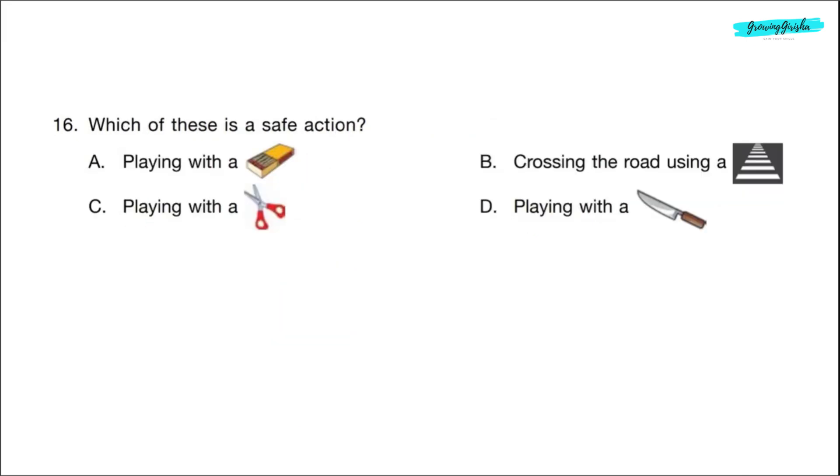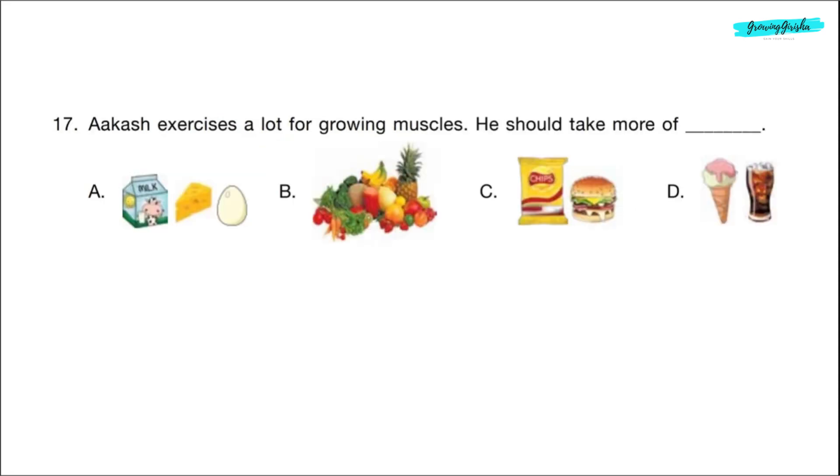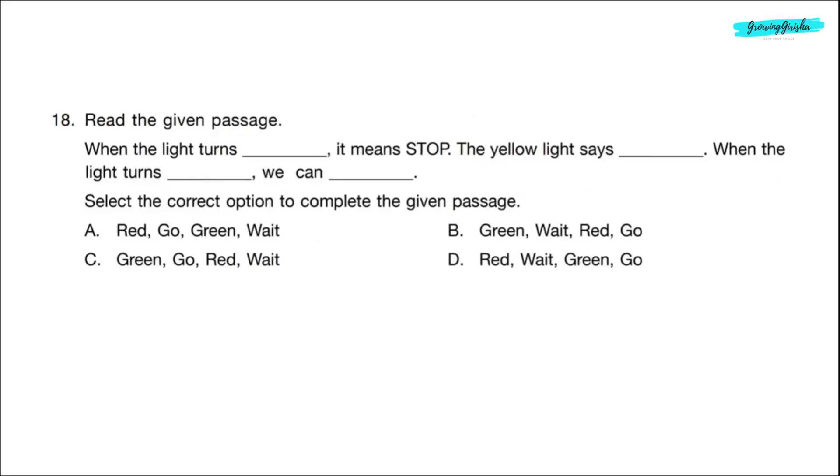Question 16. Which of these is a safe action? Correct answer is option B. Crossing the road using a zebra crossing. Others are unsafe actions. Question 17. Aakash exercises a lot for growing muscles. He should take more of dash. Correct answer is option A. Milk, cheese, eggs etc.